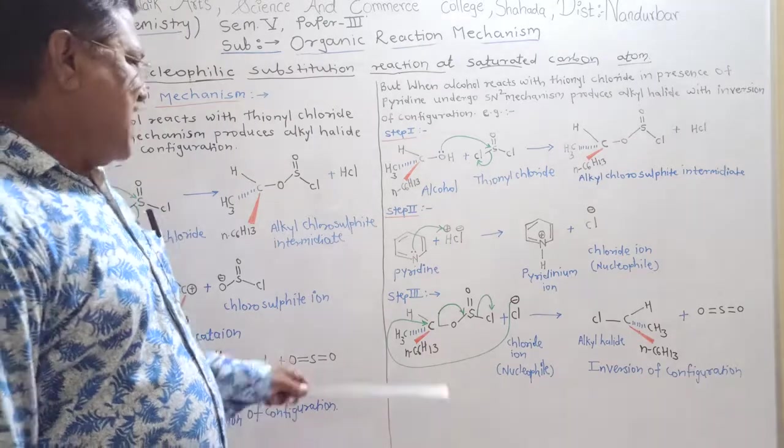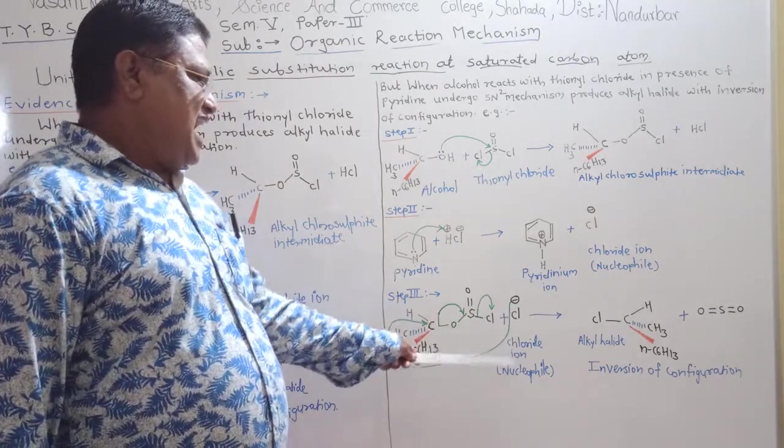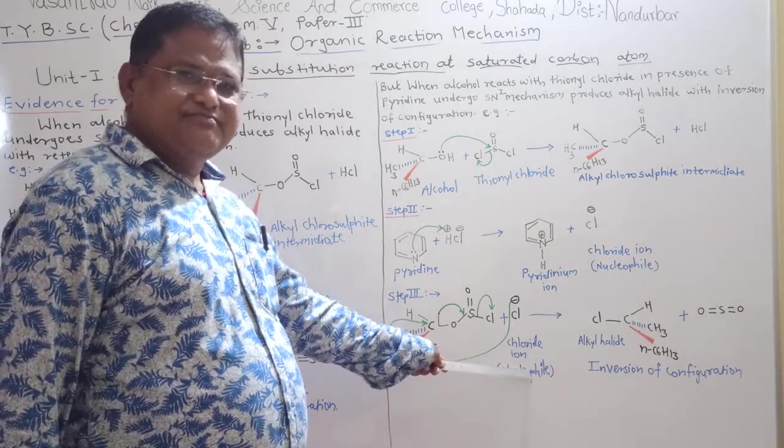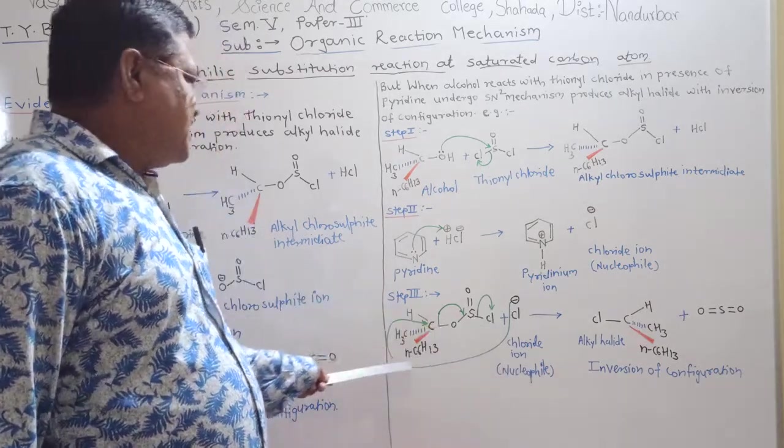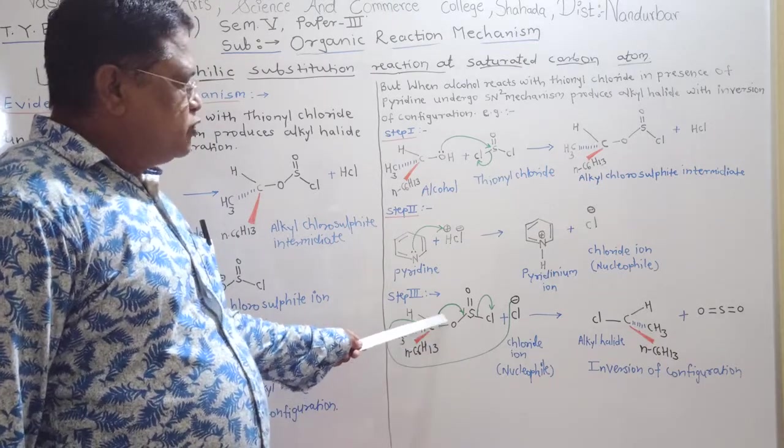In last step, this free chloride ion acts as nucleophile and attacks from the backside of carbon atom and leaving group loses its position from the front side